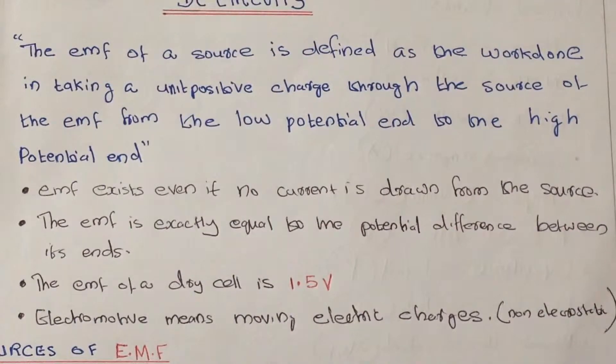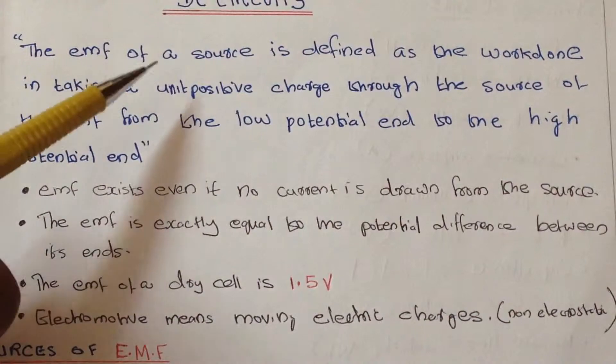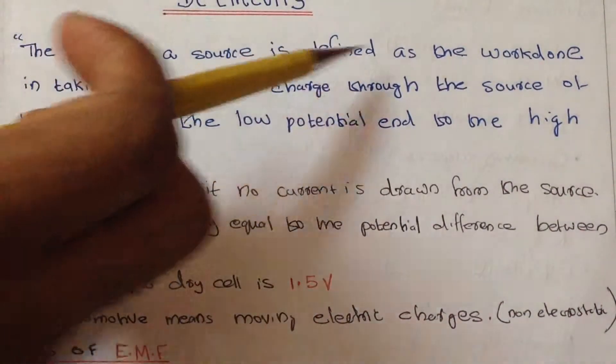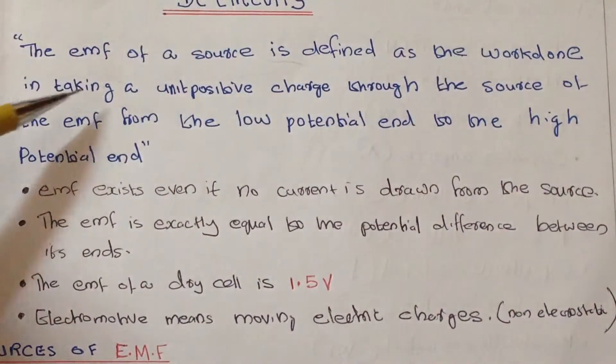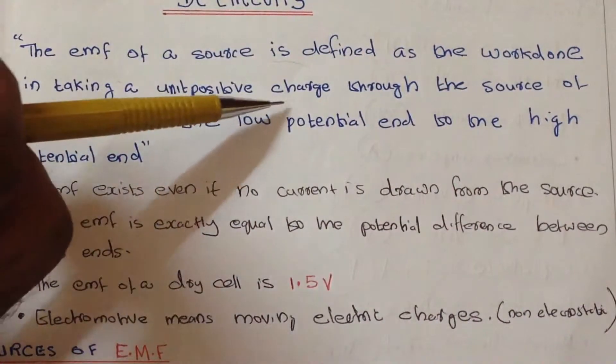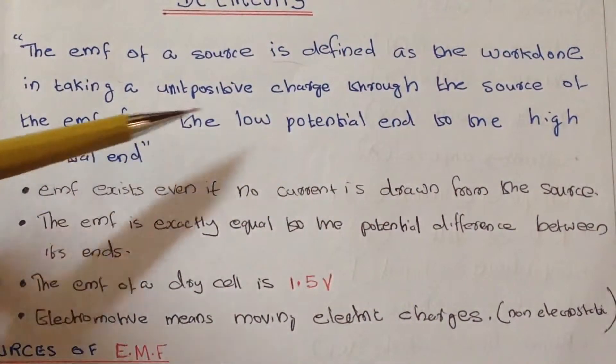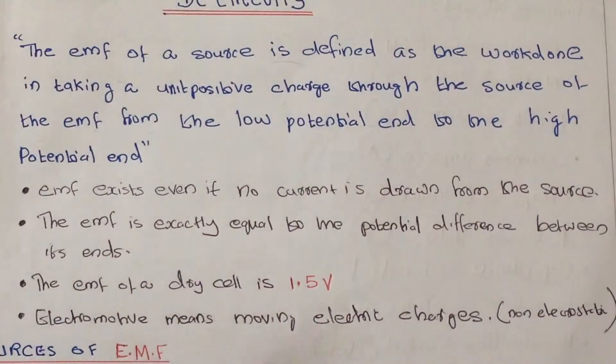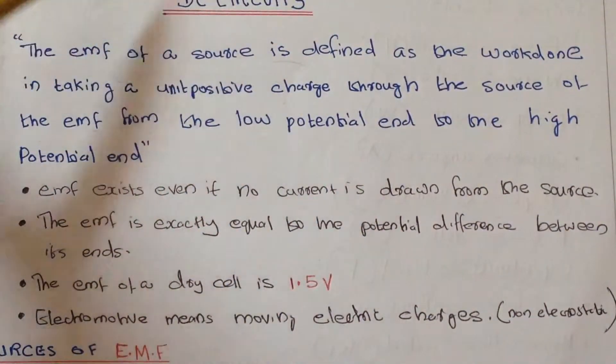Because of EMF, the induced current will happen. The EMF of a source is defined as the work done in taking a unit positive charge through the source of the EMF from the low potential end to the high potential end.